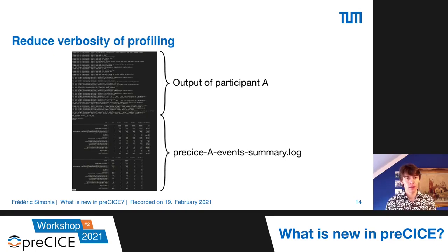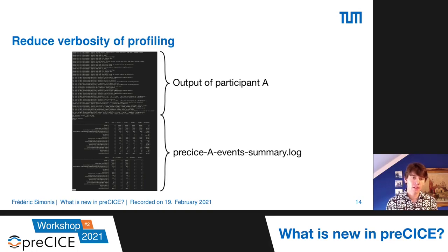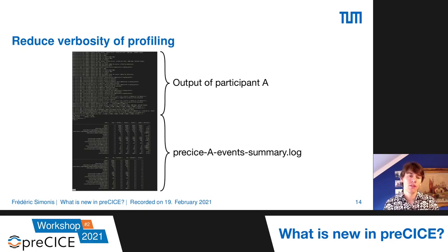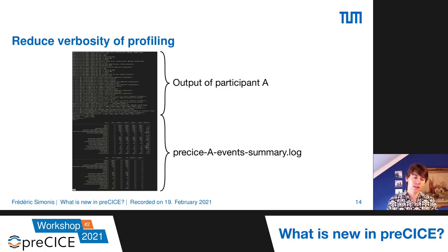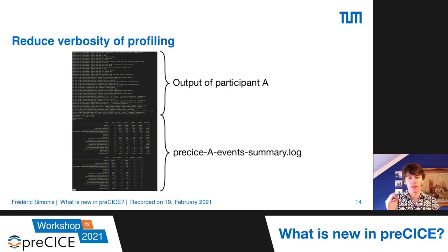Another small change is the reduction of profiling verbosity. When a participant ends, you used to get a scenario where half the vertical output space was filled with tables showing how long different events took inside preCICE — not important for the majority of users. What we did instead is write this to file: if you have solver A, it goes to precice-A-events-summary.log. The same information is still there, but it no longer pollutes the participant's output.